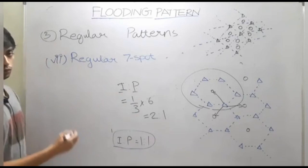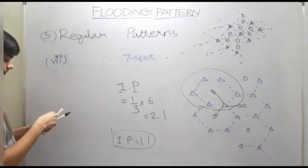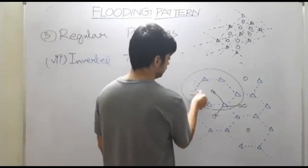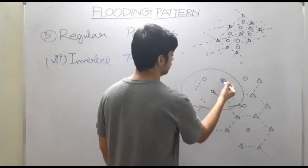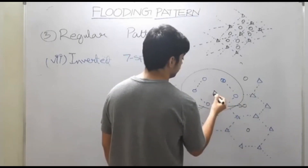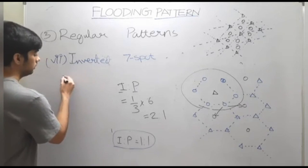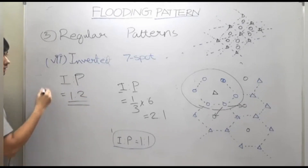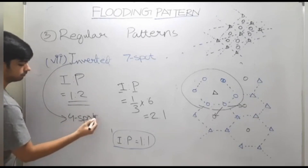So the injector-to-producer ratio will be two-to-one — for every one producing well you will have two injector wells. Now if we replace 'regular' with 'inverted,' the injector wells get converted to producer wells and producer wells get converted to injector wells. So the ratio also gets inverted: for every one injector well you will have two producer wells, which is similar to the regular four-spot pattern we studied.